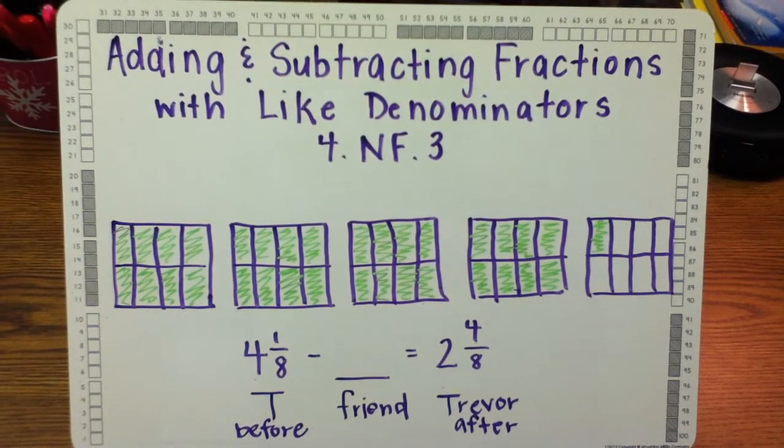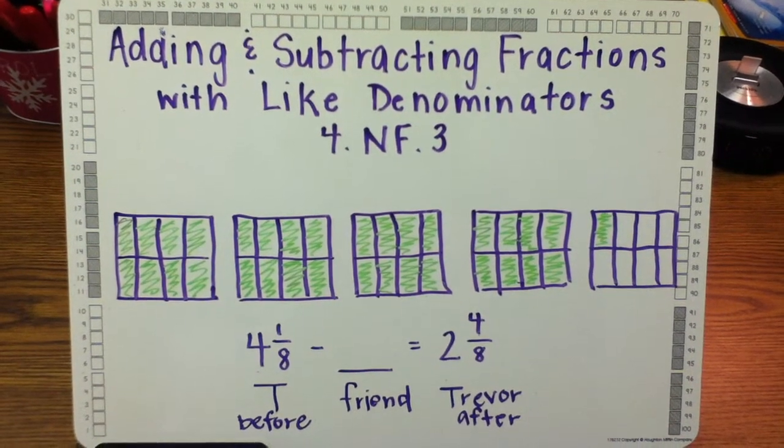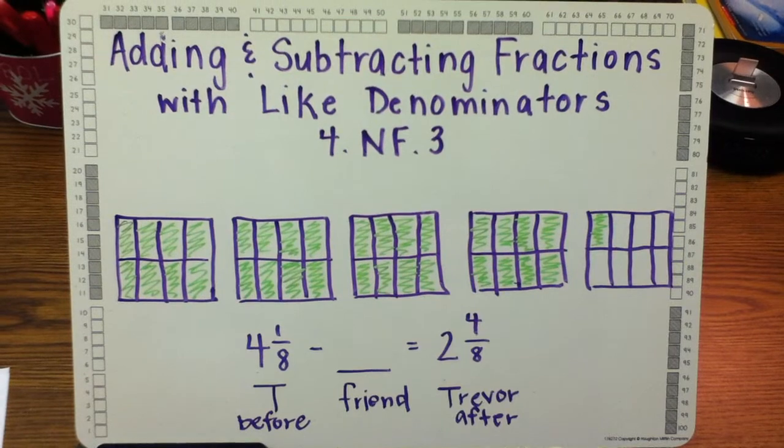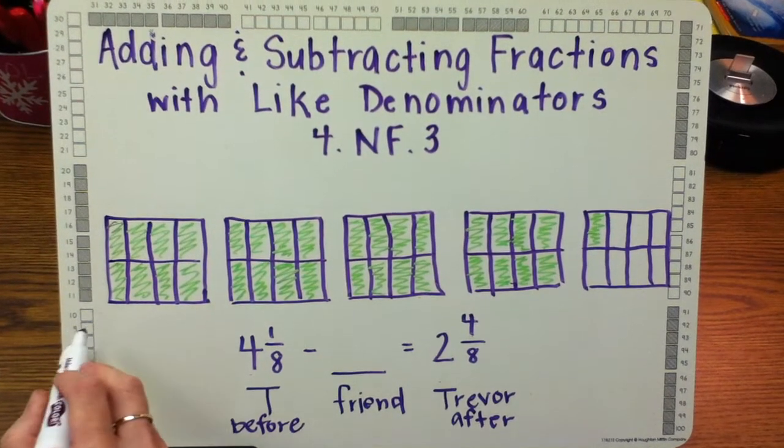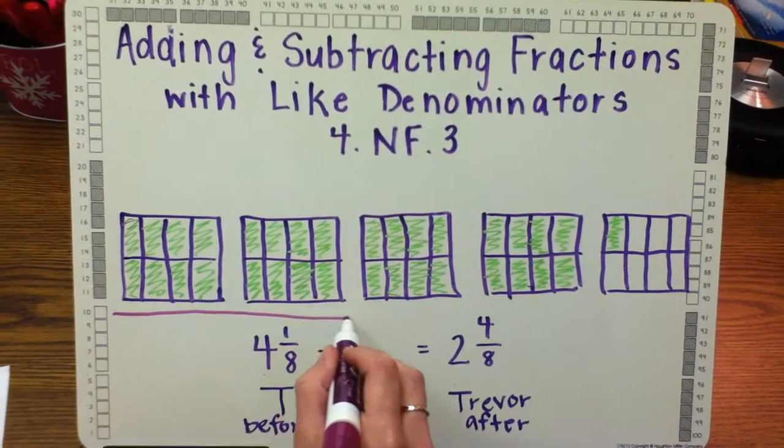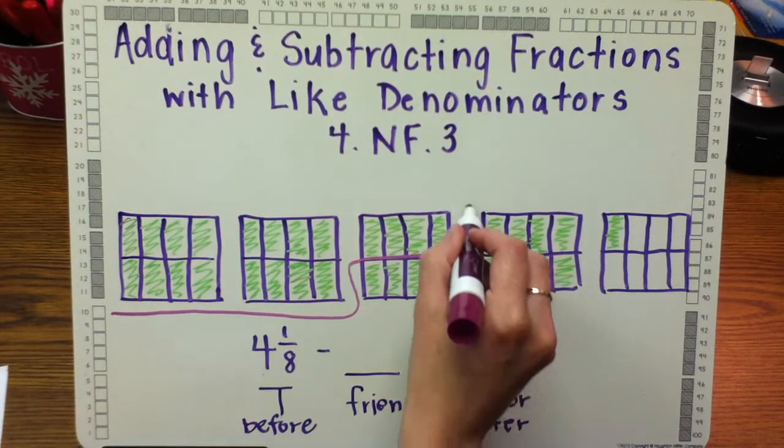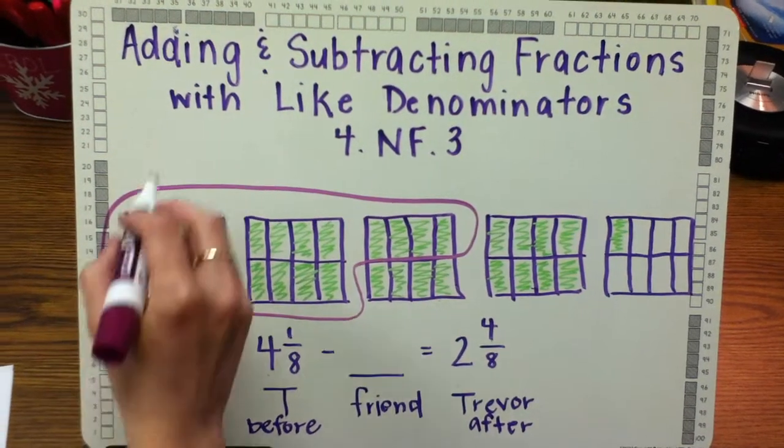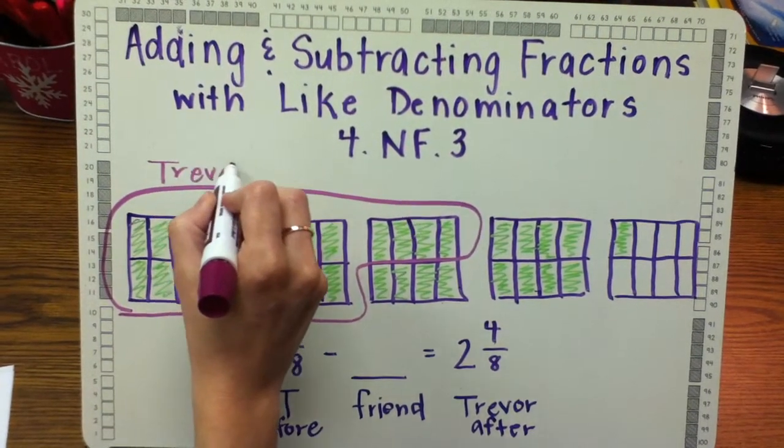I want to show the pizza that he still has left. So I'm going to circle the two and four-eighths that he has left. There's my two, and then I'm going to circle the four-eighths. This is my Trevor after.